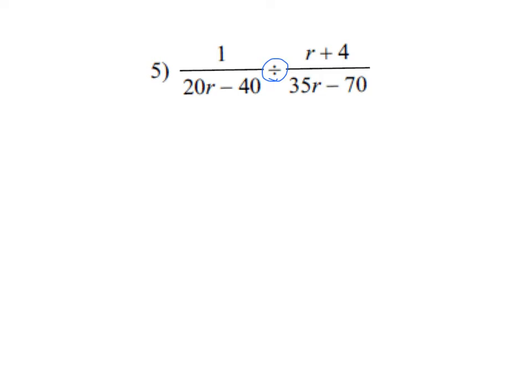On the first fraction, I just have a 1 over, and then I can pull out a GCF. This division I'm going to change to multiplication, and I'm going to flip this fraction as I factor it. This r plus 4 doesn't really have any factoring, but it's going to shift down. Then this 35r minus 70, I can pull out a GCF. I'll put up 35, and then I'll have an r minus 2 left.